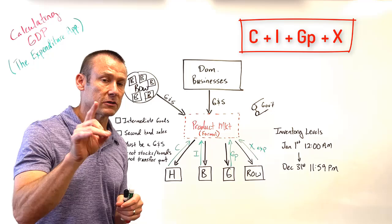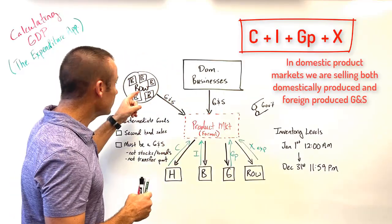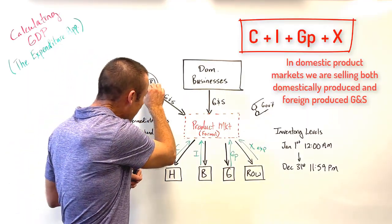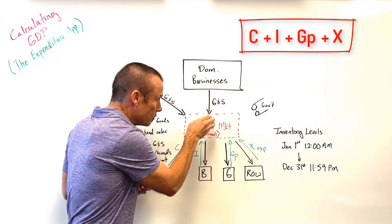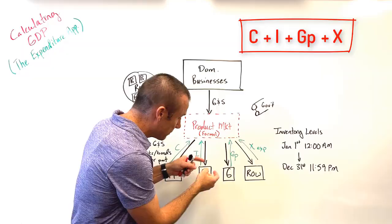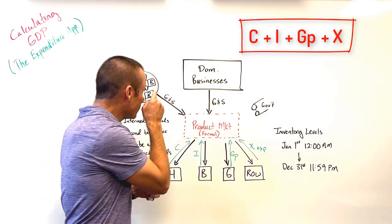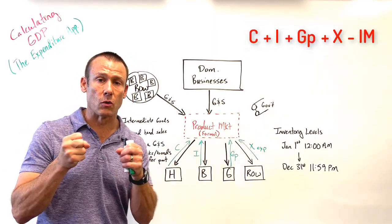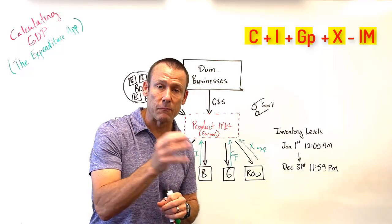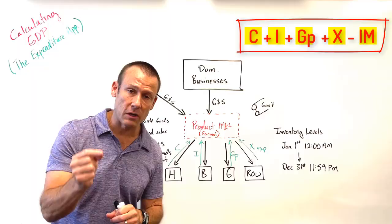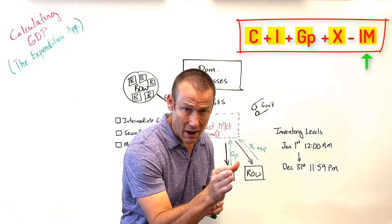With the expenditure approach we sum up consumption plus investment plus government purchases plus exports. But we need to be careful: in our product market we're selling domestically produced goods and services, but we're also selling goods produced abroad. Households, businesses, and governments all buy some of those imports, so we need to subtract out any spending on goods and services made abroad. The equation is: C + I + GP + X − M (imports).